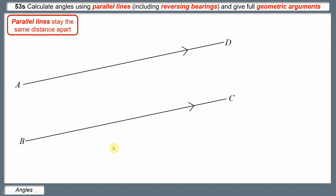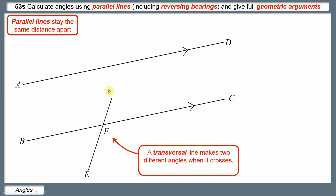The main thing we're looking at in this video is what happens with lines that cross parallel lines. Whenever two lines cross, they always make two different angles — an acute angle and an obtuse angle. This angle over here is the same size as this one because they're vertically opposite, and this angle here is the same as this one because they're vertically opposite.